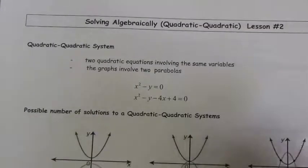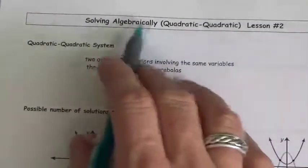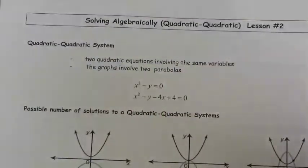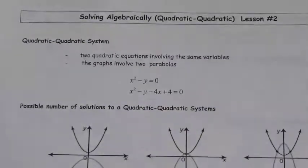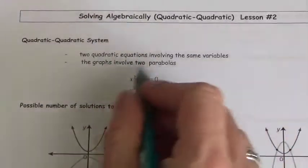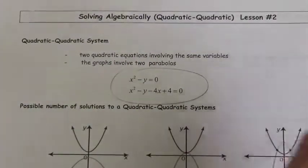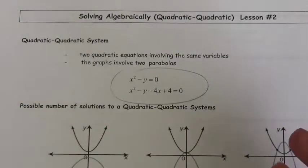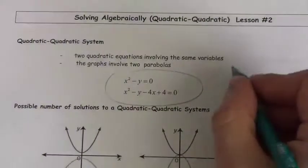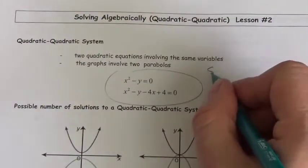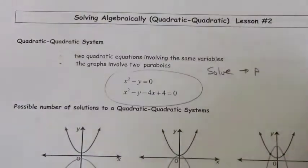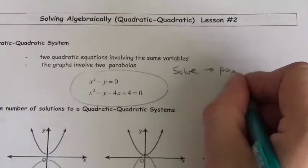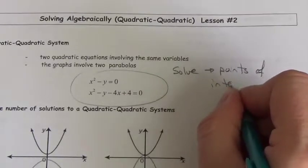In this lesson, we're going to be solving algebraically quadratic-quadratic systems of equations. When we talk about a quadratic-quadratic system of equations, we're talking about two parabolas. We're going to look at the way two different parabolas could overlap, and we're still looking for the point of intersection — or the points of intersection. Because when we say to solve this, we are looking specifically for those points of intersection.